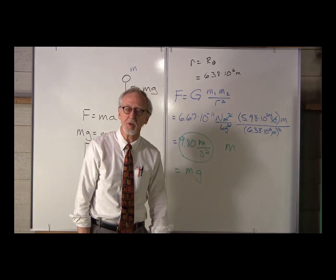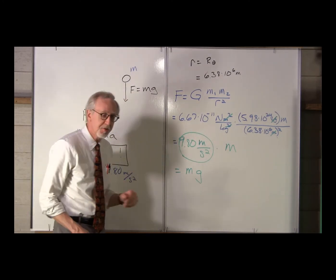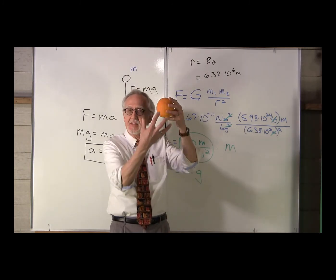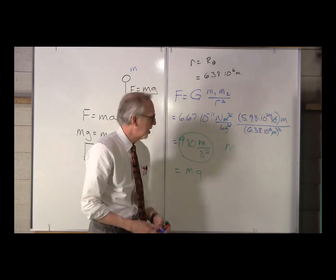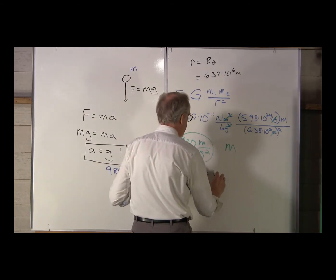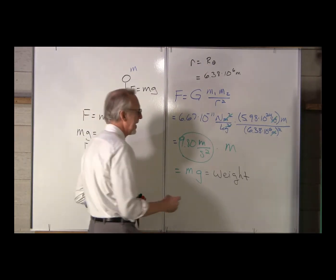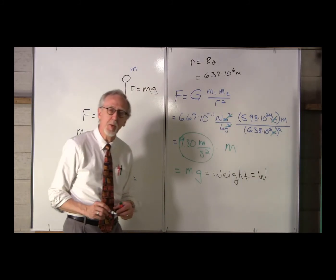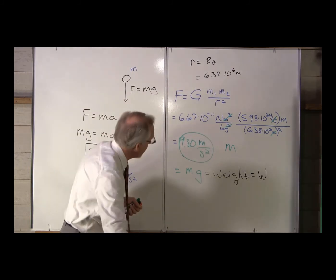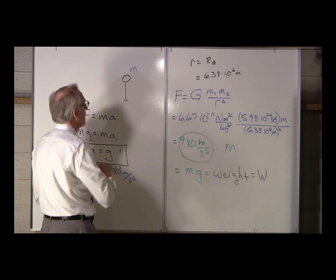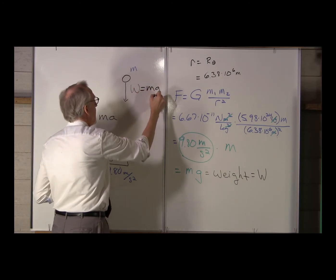All objects near the Earth's surface fall with the same acceleration. The force of attraction that acts on all objects being pulled toward the center of the Earth — that is the force we call the weight. The symbol we will always use for the weight is a capital letter W. We will see this again and again: the weight of an object is equal to M times g.